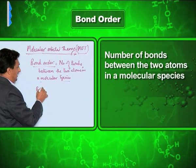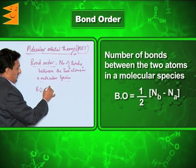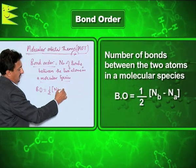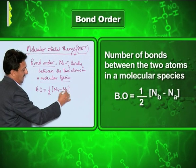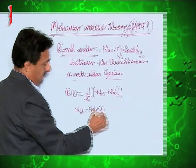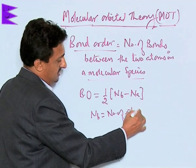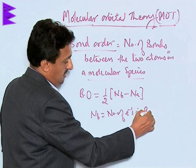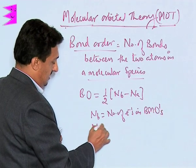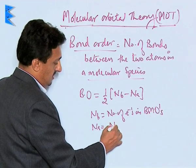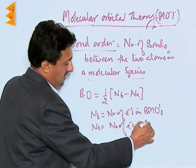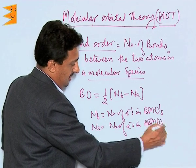Bond order can be determined by calculating half of NB minus NA, where NB is the number of electrons in bonding molecular orbitals and NA is the number of electrons in anti-bonding molecular orbitals.